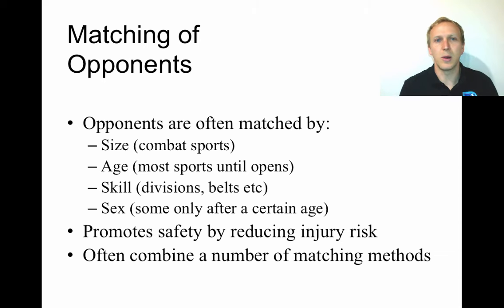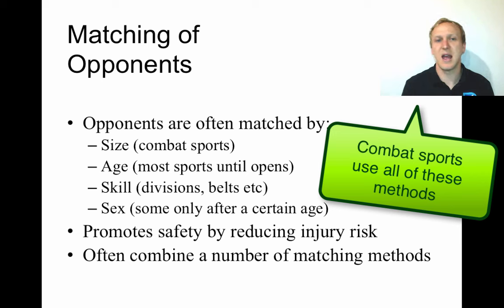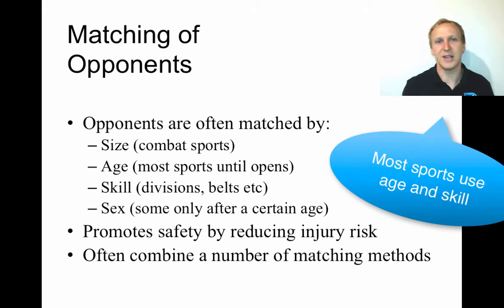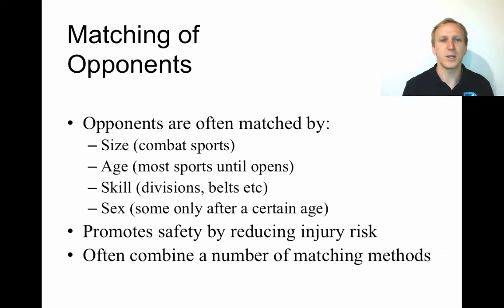A lot of sports match opponents, and each sport tends to pick the best method suited to their particular sport. Combat sports match people by size, but also by age and skill level. Most sports divide by age first, then by skill level — what division you're in or what belt you hold in a combat sport. Someone playing in seventh division is at a lower skill level than someone in first division, and matching opponents this way helps reduce the number of injuries.